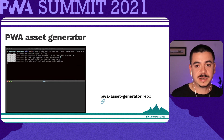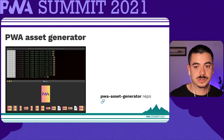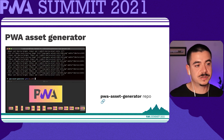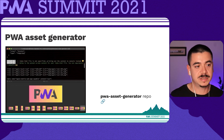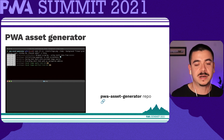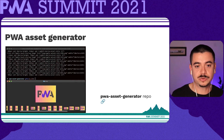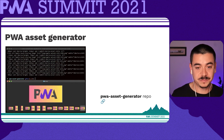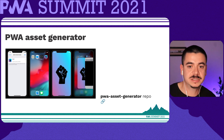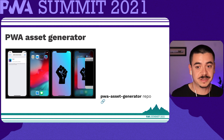PWA Asset Generator is a simple-to-use CLI tool that generates all the icons and splash screens you need across platforms, including iOS. Because you need to generate so many images and tags in order to comply with iOS expectations to render icons and splash screens beautifully on their devices, this tool automates that difficult process. It also generates the meta tags, and it uses web technologies to render icons and splash screens — so the sky is the limit when it comes to your creativity.